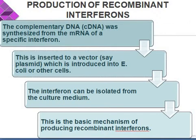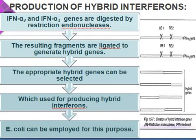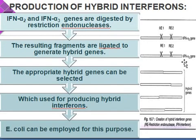Let's discuss the second process: production of hybrid interferon. As you can see in this particular diagram, interferon alpha 1, alpha 2, and alpha 3 — these genes are shown in the diagram and are digested by restriction endonuclease enzymes. The resulting fragments are ligated with the help of DNA ligase, which helps to regenerate a hybrid gene. These appropriate hybrid genes can be selected and used for production of a hybrid interferon, utilizing E. coli for this process.